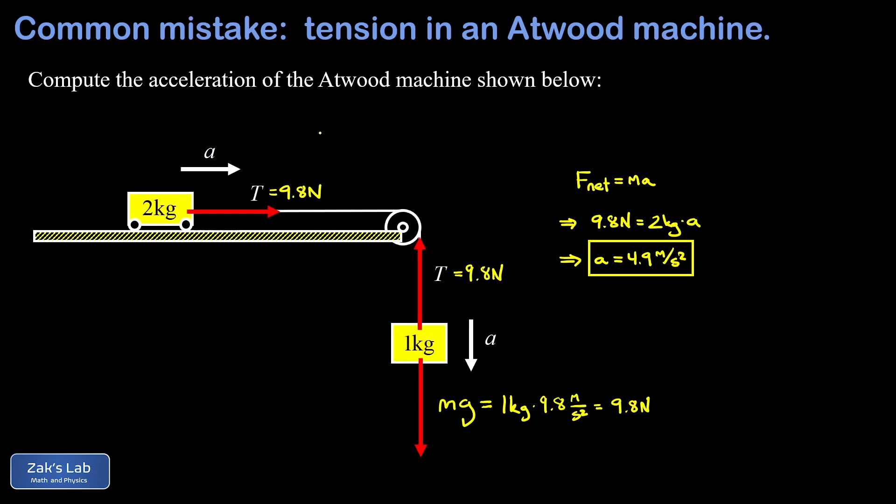But just to follow things through, they then say the tension is 9.8 newtons on the other end of the string. And then they apply Newton's second law to the cart F net equals ma. They plug in the force of 9.8 newtons and solve for the acceleration and they get 4.9 meters per second squared.